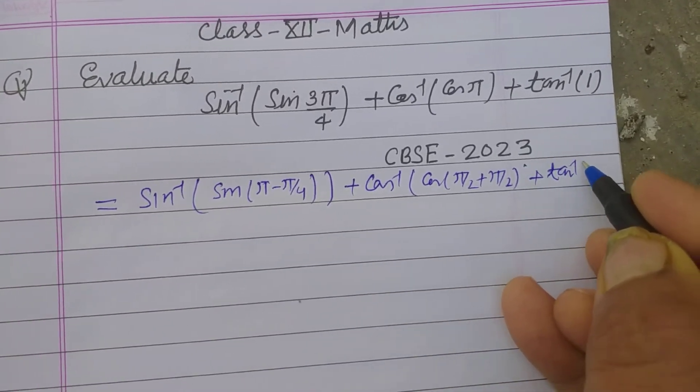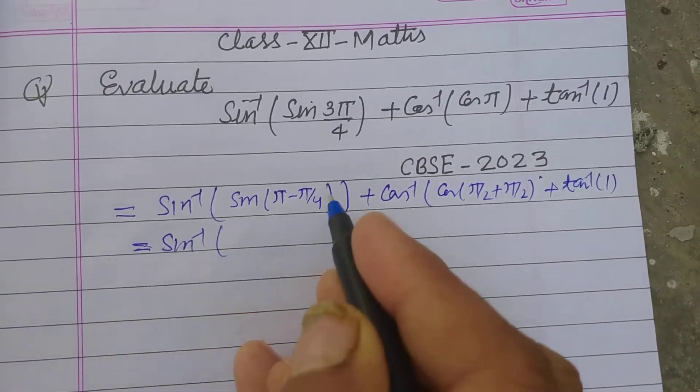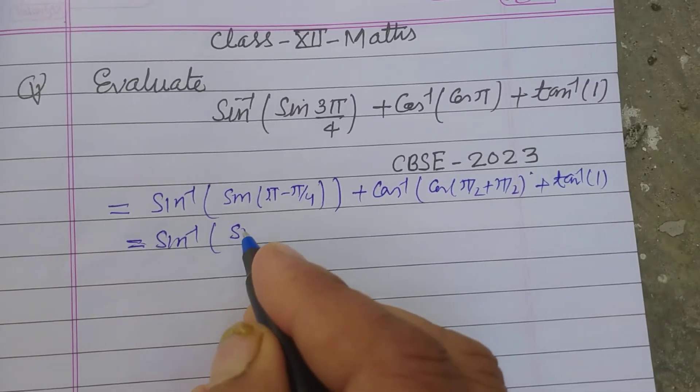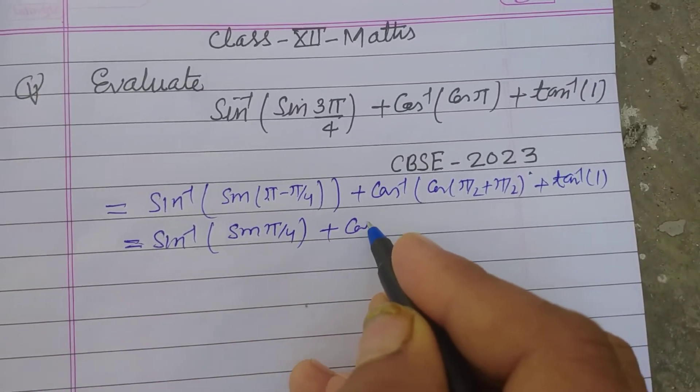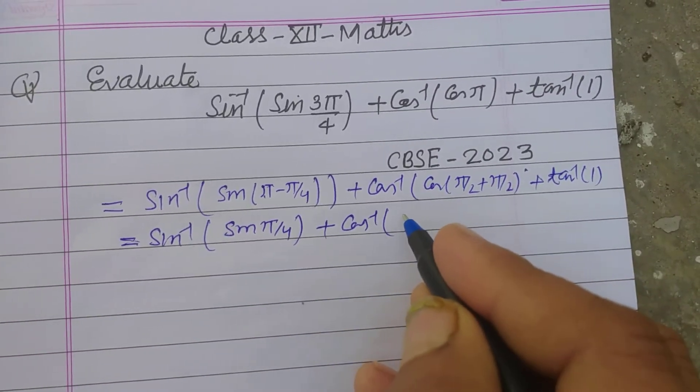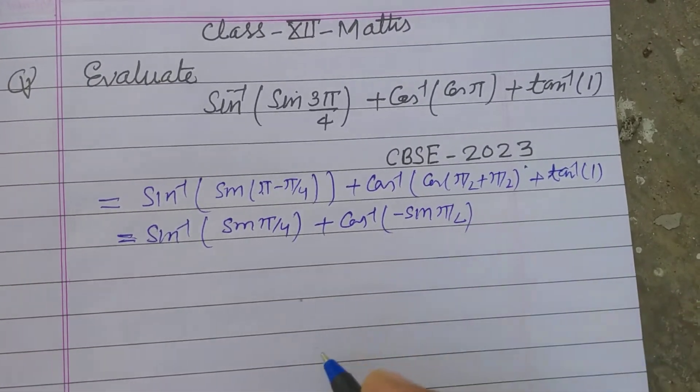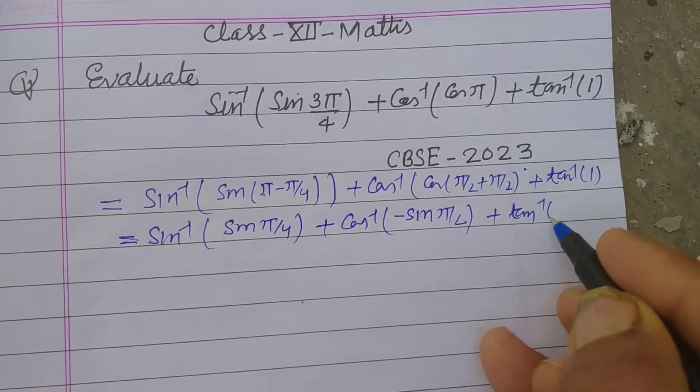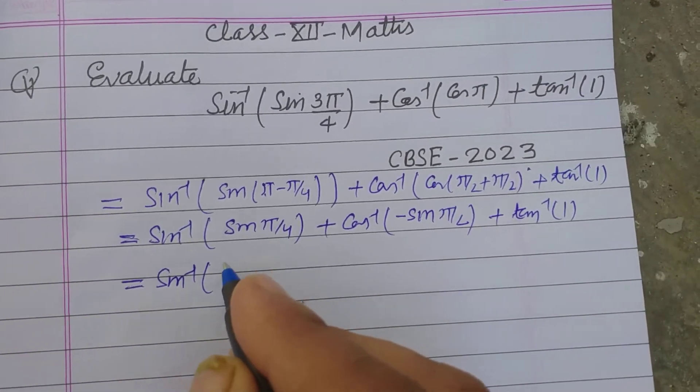So sine inverse sine (180° minus theta) is sine theta, so this becomes sine π/4. Plus cos inverse cos (90° plus theta), which is minus sine theta, plus tan inverse 1. Sine inverse sine π/4 is 1 upon root 2.